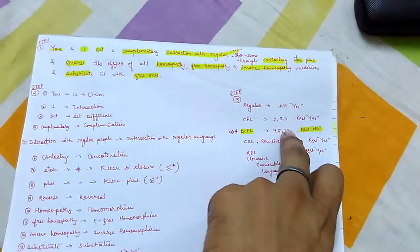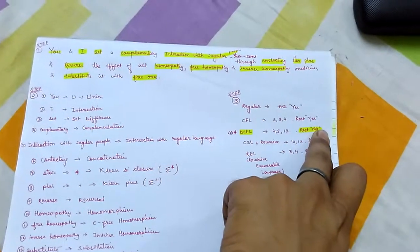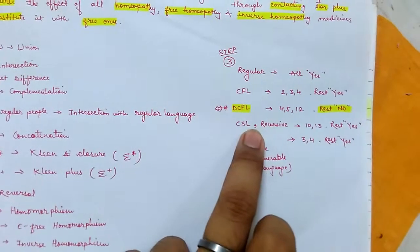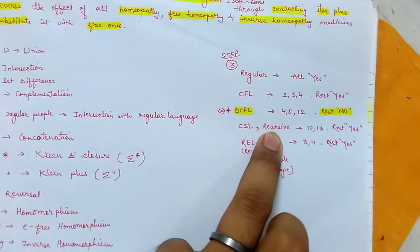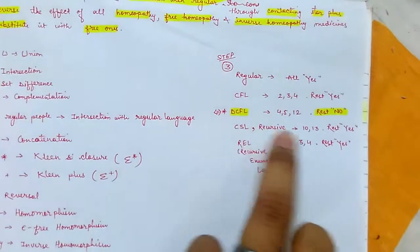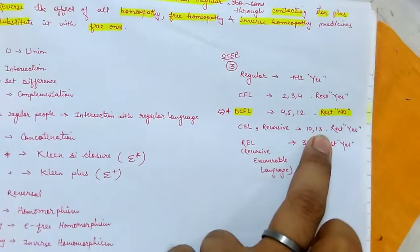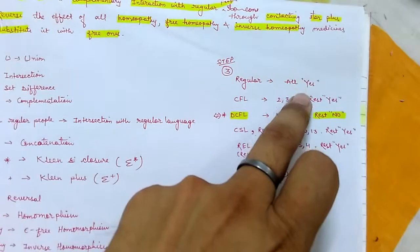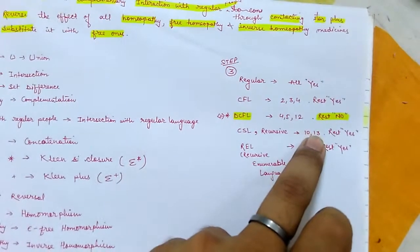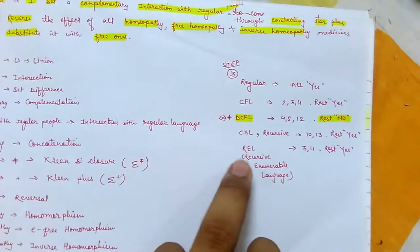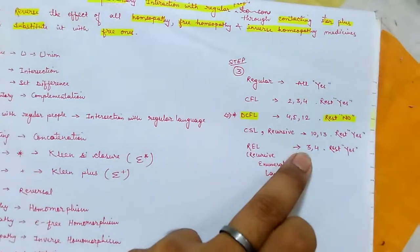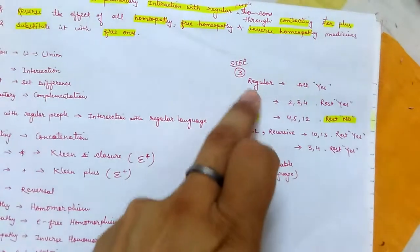Then CSL, it's same as recursive. CSL and recursive are same in which ten and thirteen are not included, rest included. Just like the previous ones, the trend is following here. Ten, thirteen not included, rest included. For REL, that is recursively enumerable language, it's three and four only, just dragged from CFL itself. You can see three and four are not included, rest included.